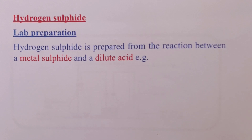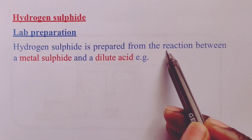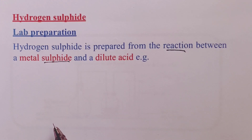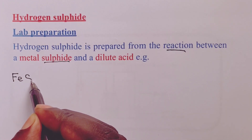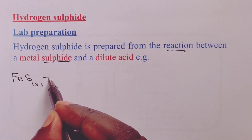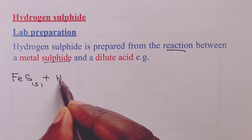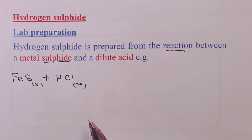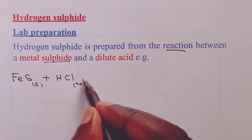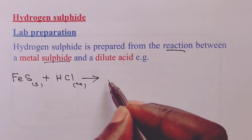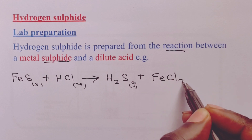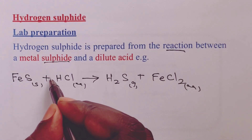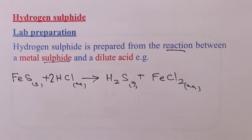The gas is prepared from the reaction between a metal sulfide and a dilute acid. For our discussion, we shall use iron(II) sulfide as the metal sulfide. For dilute acids, we shall use hydrochloric acid, and we shall also write an equation for the reaction which occurs when you use dilute sulfuric acid. In the case of hydrochloric acid, we obtain hydrogen sulfide together with iron(II) chloride. We balance the equation with a 2 on our dilute hydrochloric acid.